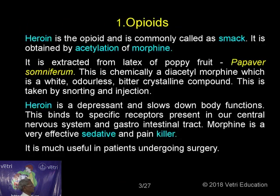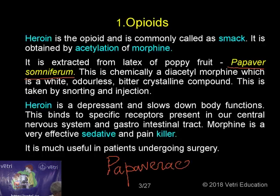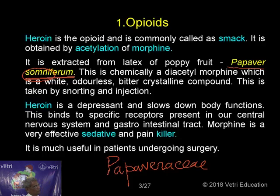The first one is opioids. Heroin is the opioid and is commonly called 'smack.' It is obtained by acetylation of morphine. It is extracted from the latex of a poppy fruit called Papaver somniferum, which belongs to the family Papaveraceae. The word 'somniferum' comes from the base word 'somna,' meaning sleep. After consuming this drug, people feel a sleepy mood — that is why it is called somniferum.